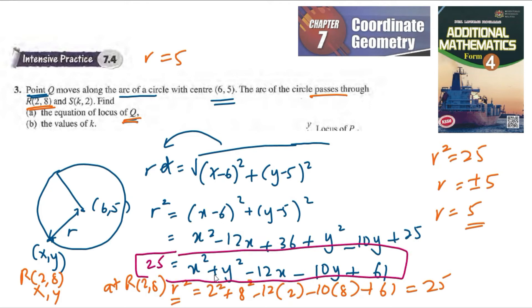We have x² + y² - 12x - 10y + 61. We have to minus 25 so that we can equal it to 0. So x² + y² - 12x - 10y + 36 is equal to 0.